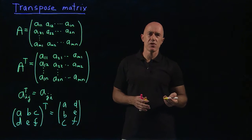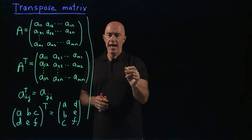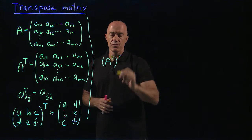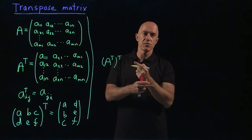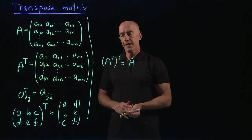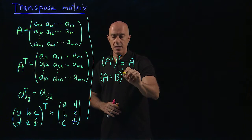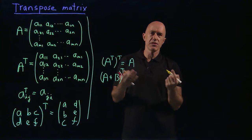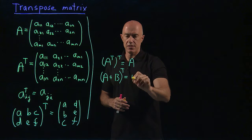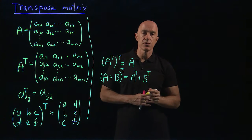What is the algebra of transpose? If we have a transpose matrix and we take the transpose of that, we're changing the columns with the rows and then changing them back again, so that's clearly just A. If you have the sum of two matrices of the same size and you take the transpose — since A plus B just adds elements — you should see quite easily that this equals A transpose plus B transpose.